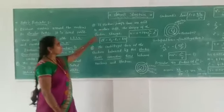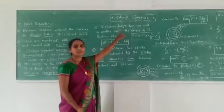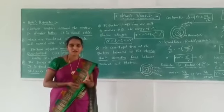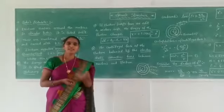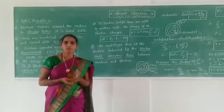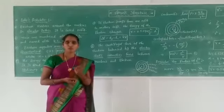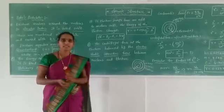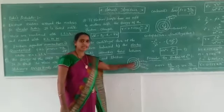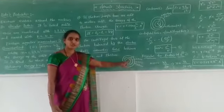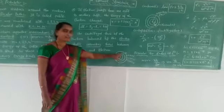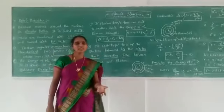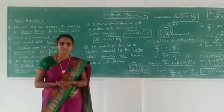The energy varies only when the electron jumps from one orbit to another orbit. In that case only, energy transformation takes place. Otherwise, the energy of the orbit is fixed and constant. In that orbit, the energy of the electron is also constant. But sometimes, atoms absorb energy. In that case, the electron absorbs energy and jumps from lower energy levels to higher energy levels. The energy levels which are nearer to the nucleus are called lower energy levels, and those far away from the nucleus are called higher energy levels.